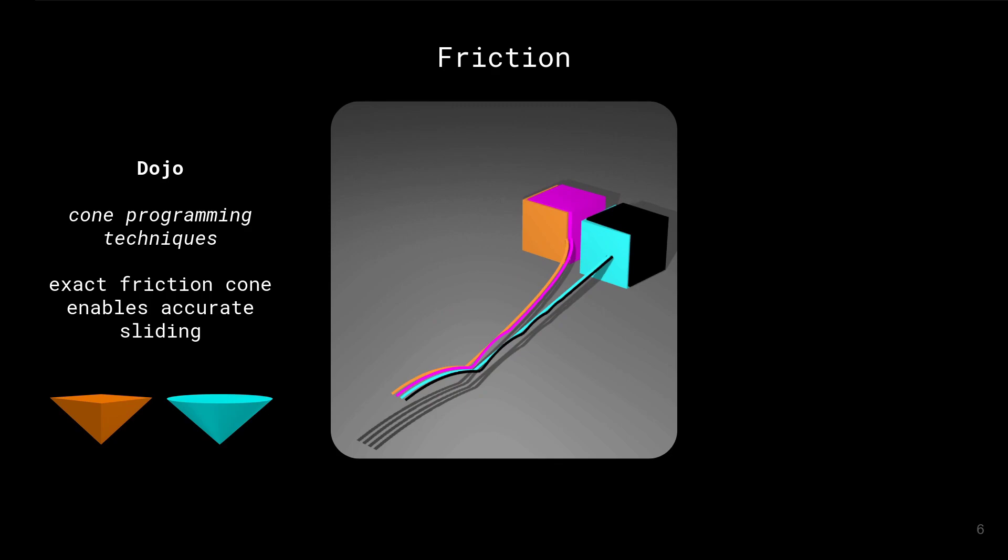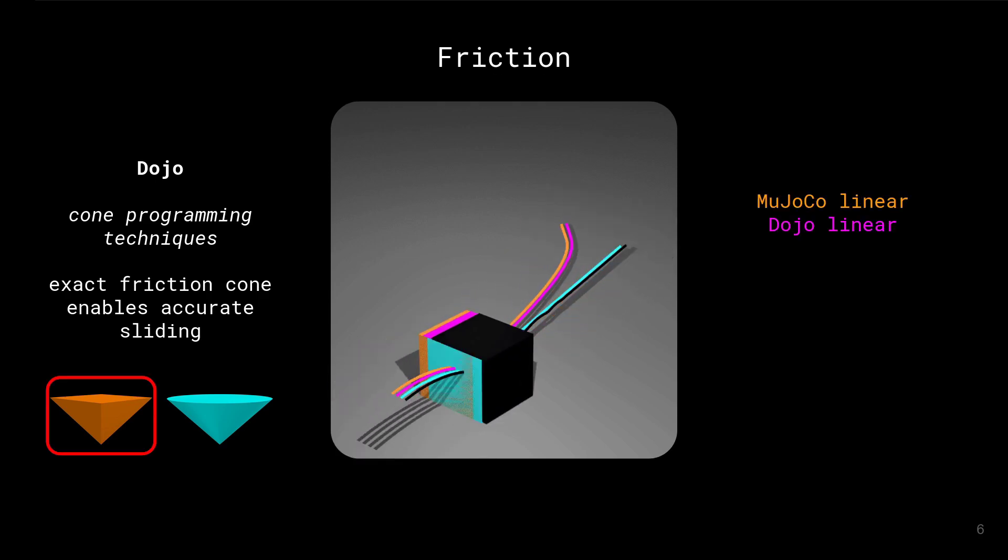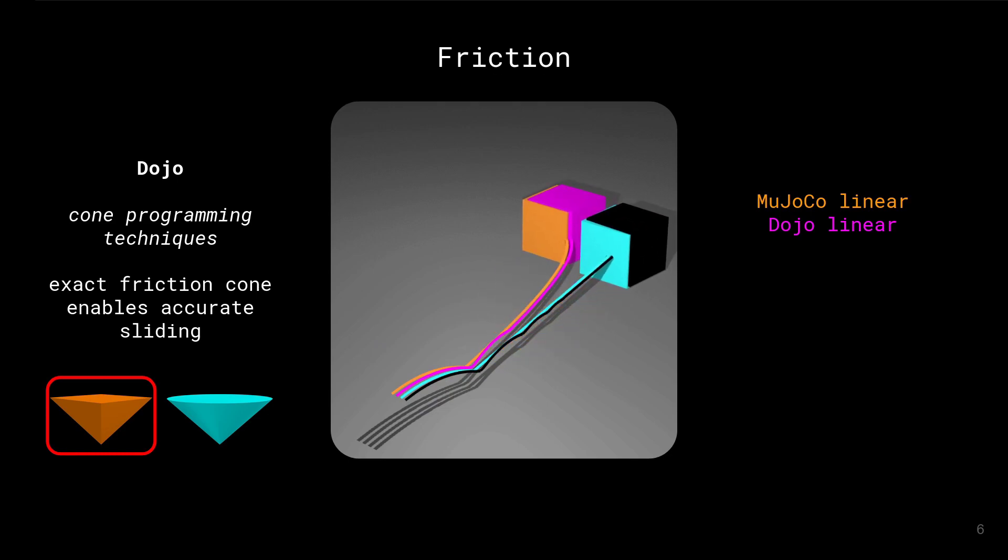Many existing physics engines approximate the Coulomb friction cone with a pyramidal shape. This is a linear approximation that is necessary to fit into the linear complementarity problem formulation. The issue with this linearization is that it creates some significant simulation artifacts.